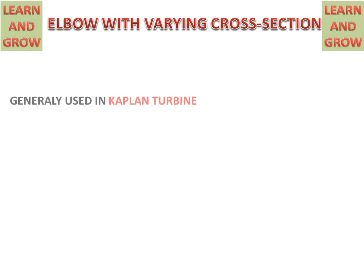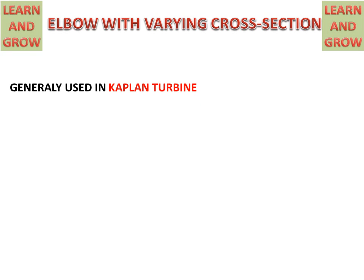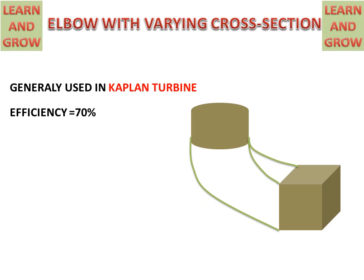Elbow with varying cross section area. This is generally used in Kaplan turbines and its efficiency is 70%. The upper part has a circular cross section and the lower part has a rectangular cross section. Water will enter from the circular cross section and exit from the rectangular cross section.